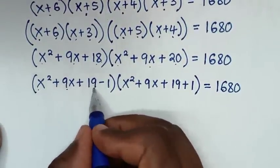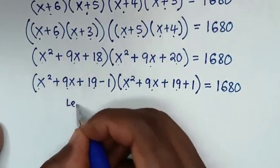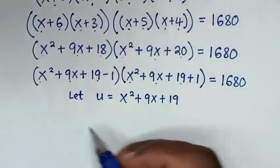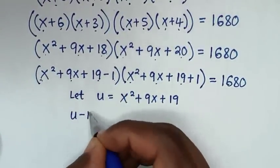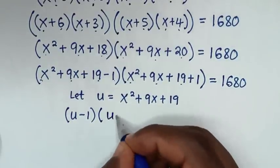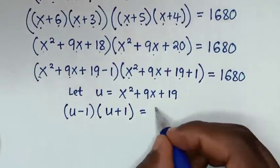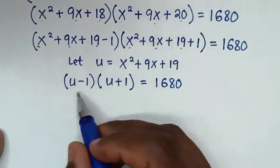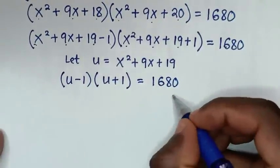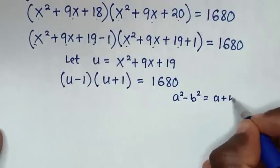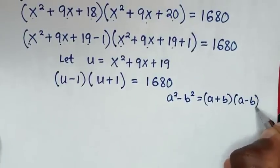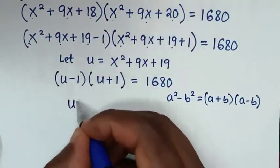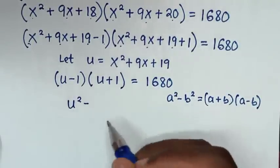We let u = x²+9x+19, so the expression becomes (u-1)(u+1) = 1680. This is in the form of a difference of squares: a²-b² = (a+b)(a-b). So (u-1)(u+1) = u² - 1² = u² - 1 = 1680.